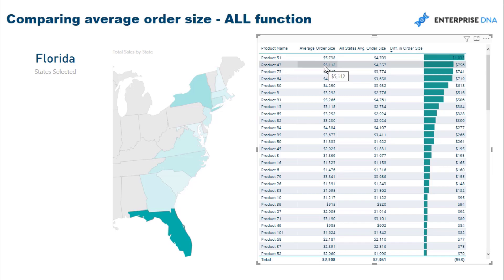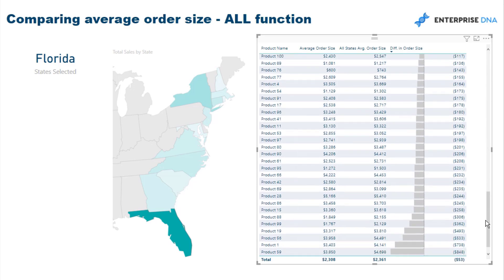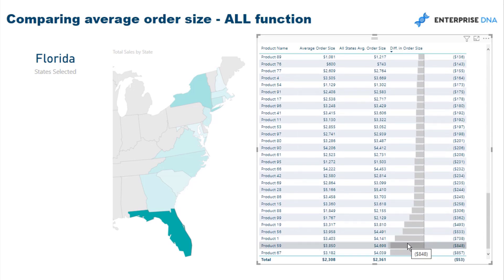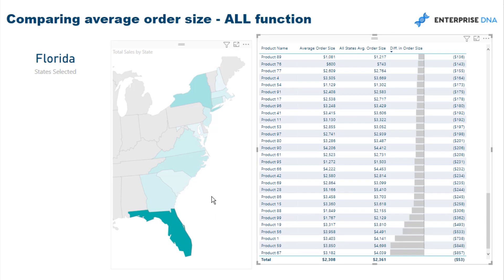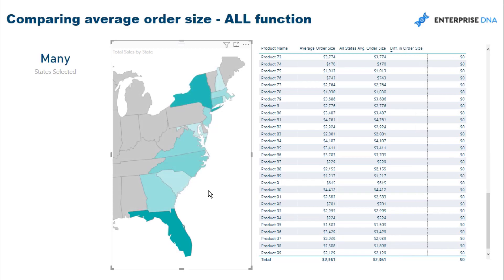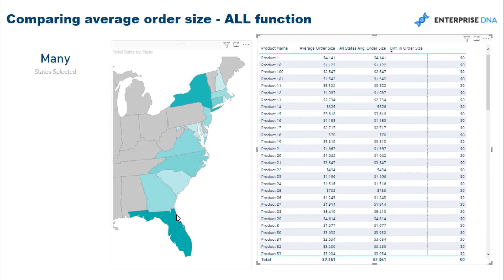That in itself is really good insight — you can start to ask really good questions: why are there outliers here? Why are we selling these at such a higher price in this region versus similar products selling well below the average order size in other regions? It could be due to a number of factors — the weather, the customer base, the socioeconomic group. This is the sort of insight that would showcase that. So how do we get there? We're going to do a couple of steps.